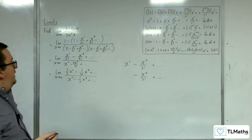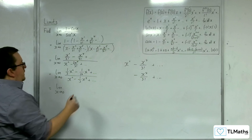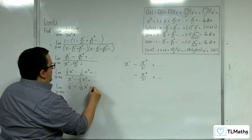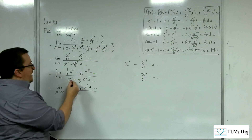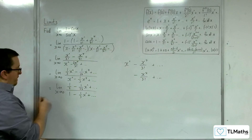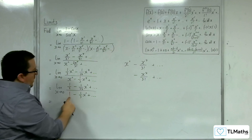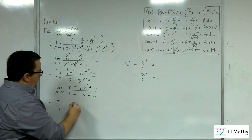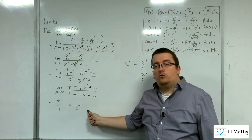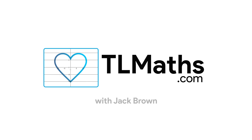Now dividing top and bottom by x², I get ½ minus (1/24)x² plus other terms, over 1 minus (1/3)x² plus other terms. As x tends to 0, all those terms tend to 0, leaving ½ over 1, which equals ½. So the limit of this function as x tends to 0 is 1/2.